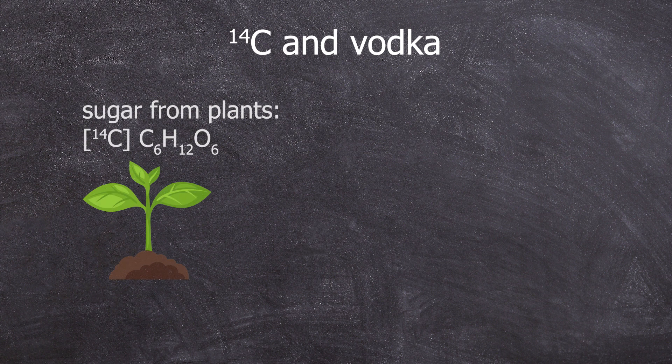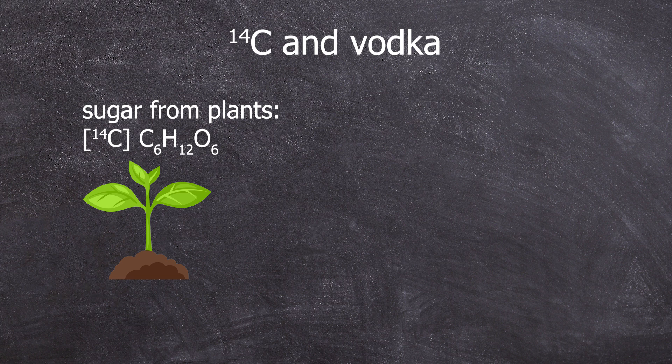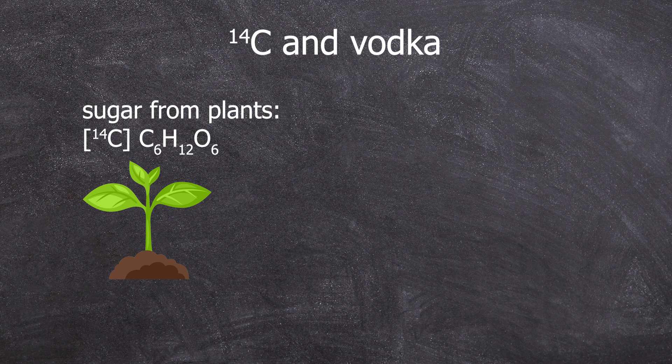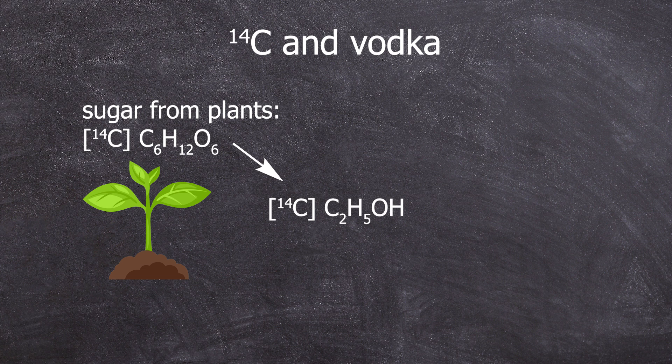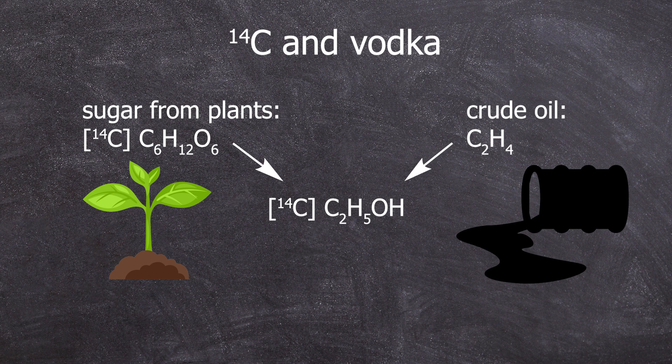When alcohol is fermented from plants, the carbon-14 was previously present in plant sugar C6H12O6 and is subsequently contained in the C2H5OH ethanol. However, there is also the possibility that ethanol can be produced from petroleum, and since petroleum is older than 57,000 years, any carbon-14 that was once present has decayed. This means that a carbon-14 content in alcohol is direct evidence that it was obtained from plant fermentation.